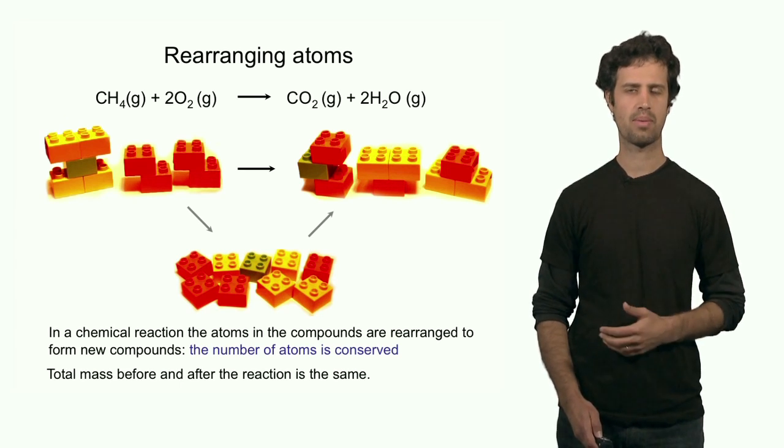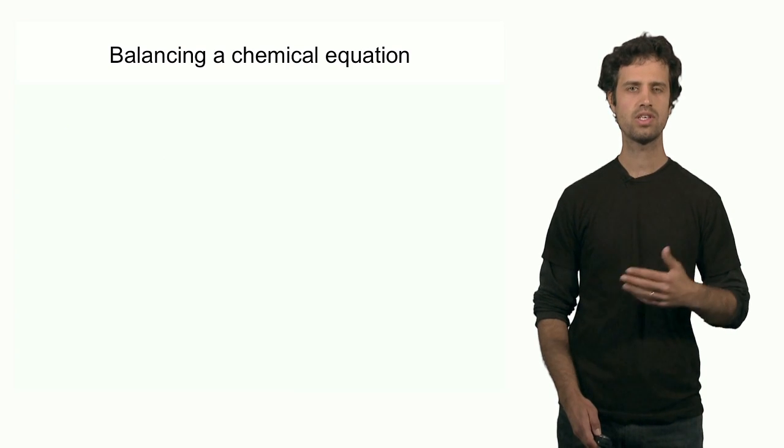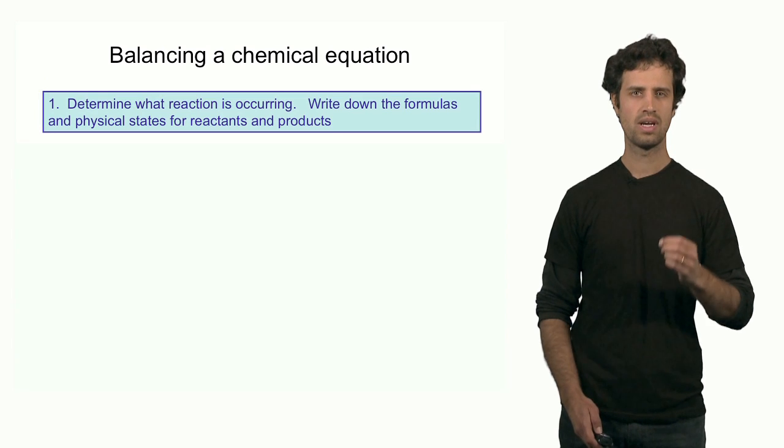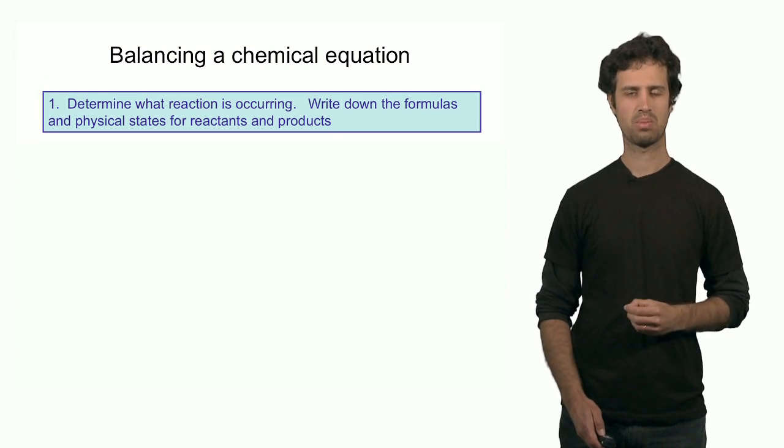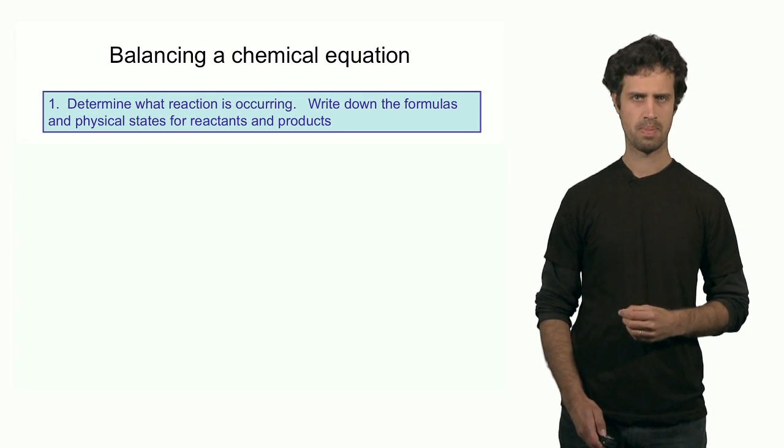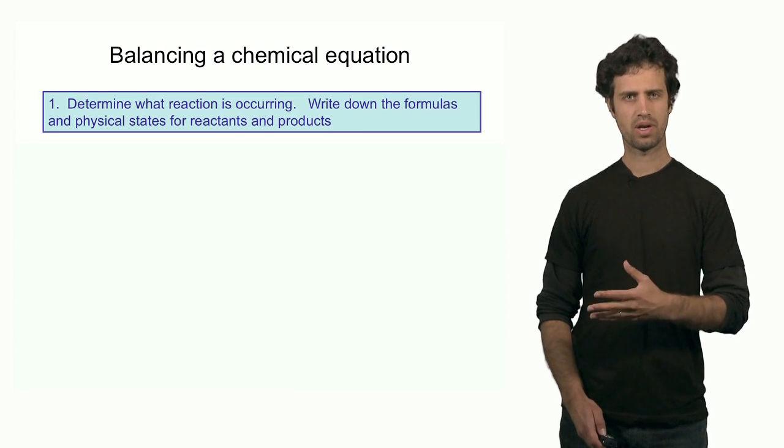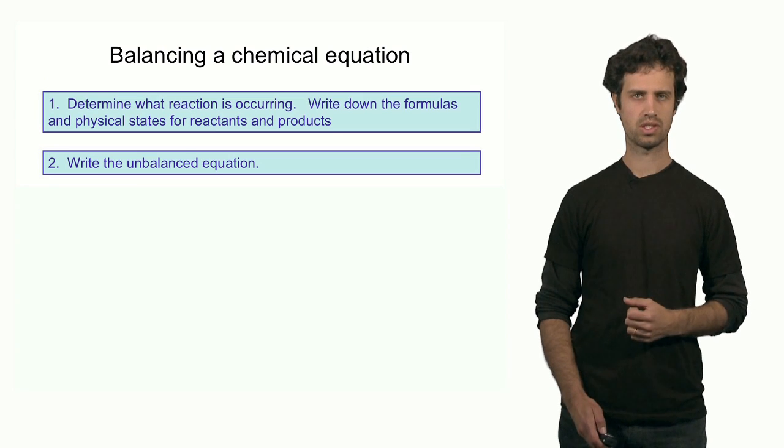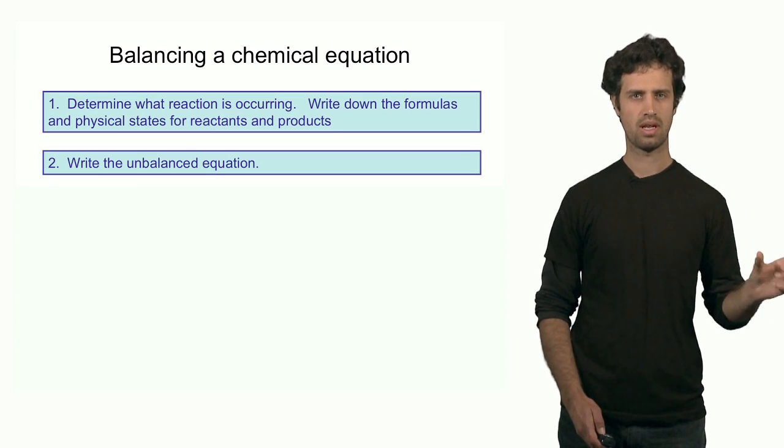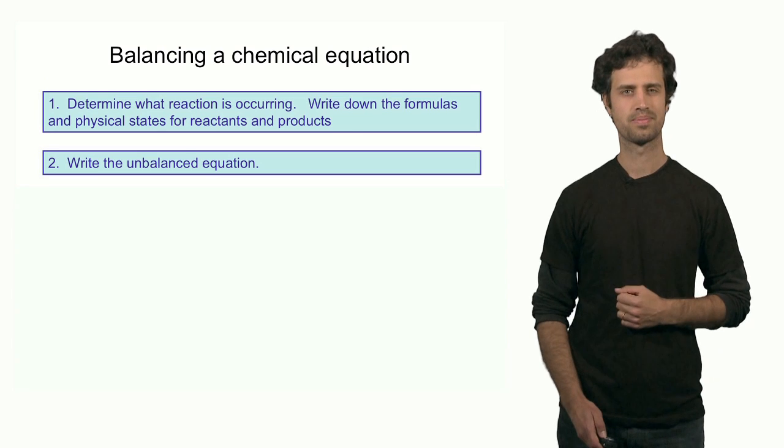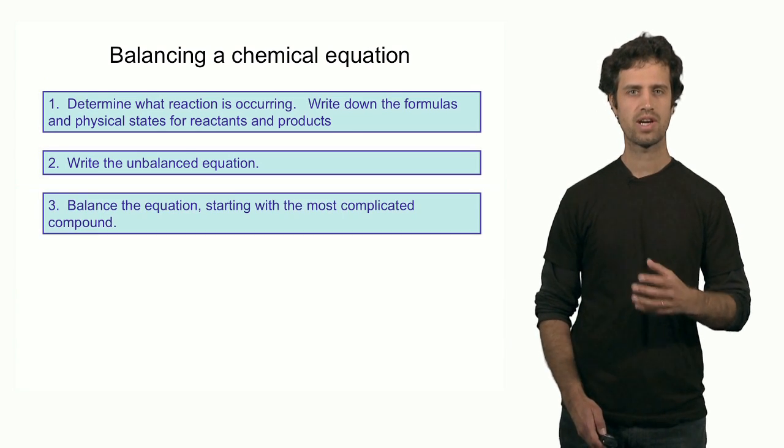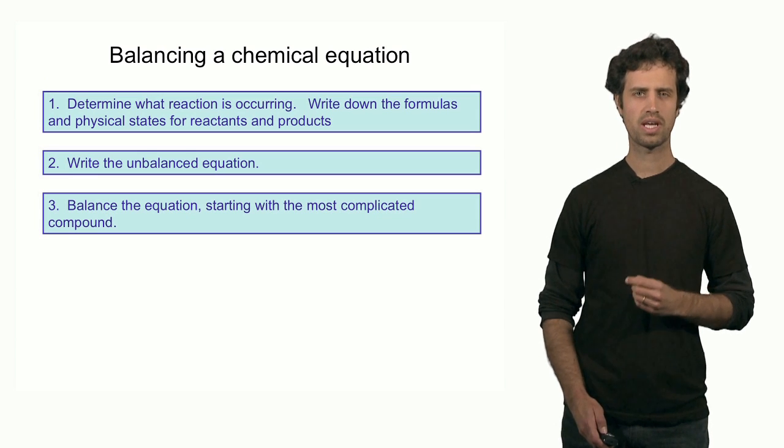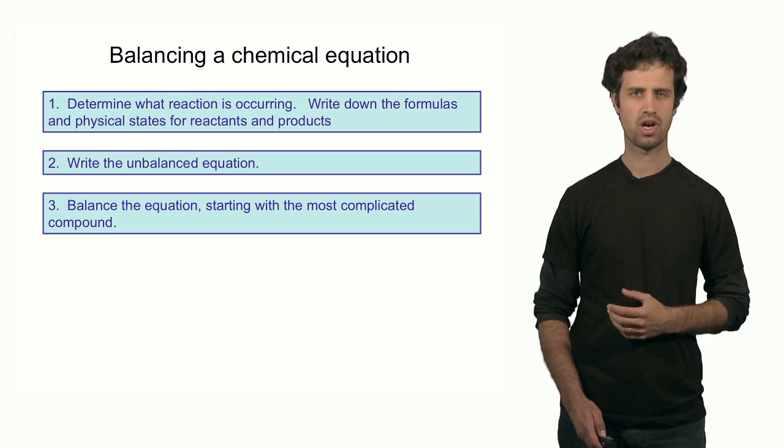So how do we balance a chemical equation? This is the general flow of how we do it. The first thing is to identify what is taking place, what reaction is taking place. What are the reactants and what are the products and what are the physical states? Then we write the unbalanced equation. We put the reactants to the left and the products to the right. Then we try to balance the equation. And we typically start with the most complicated molecule or the most exotic atom.